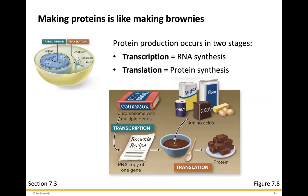Protein production occurs in two stages. Transcription occurs inside the nucleus and synthesizes RNA — specifically messenger RNA. Translation is the taking of the messenger RNA transcript and reading it by an organelle called a ribosome, which synthesizes the amino acid strand and generates the protein structure. Translation occurs in the cytoplasm, either on a free ribosome or on the rough ER, which is studded with ribosomes.